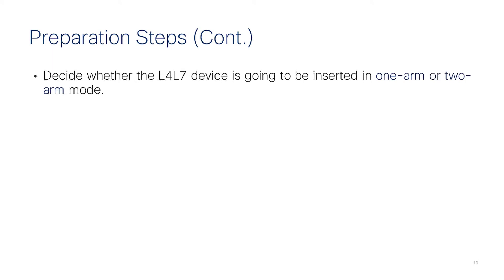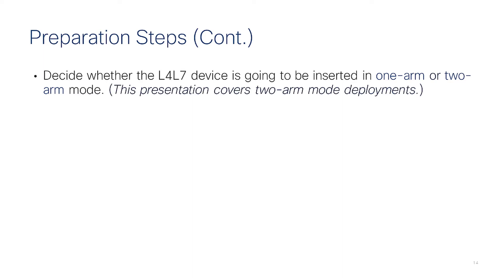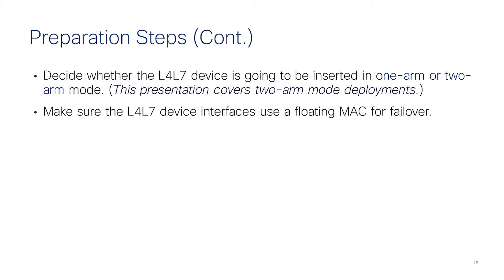You need to decide whether to use the layer 4-7 device in one-arm mode or two-arm mode. This presentation focuses on insertion in two-arm mode. For redundancy purposes, the service device that fails over must use the same MAC as the device that was primary before — essentially a floating MAC address.